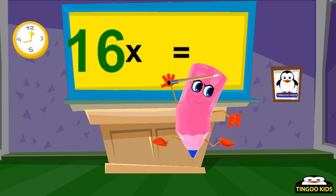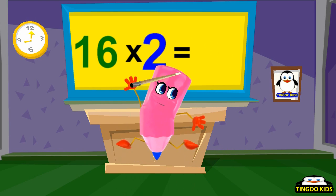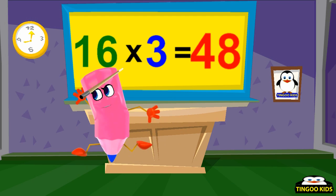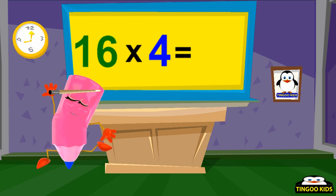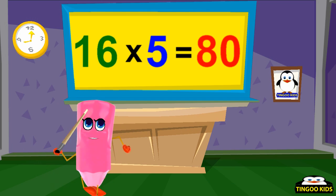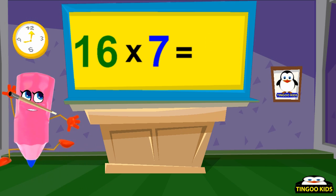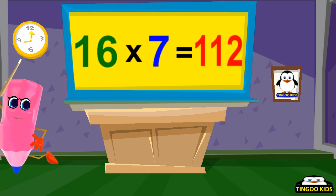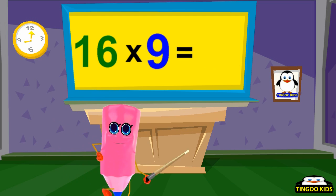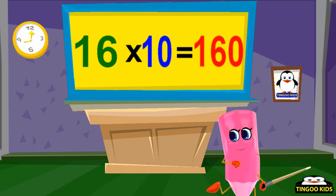16 times 1 is 16. 16 times 2 is 32. 16 times 3 is 48. 16 times 4 is 64. 16 times 5 is 80. 16 times 6 is 96. 16 times 7 is 112. 16 times 8 is 128. 16 times 9 is 144. 16 times 10 is 160.